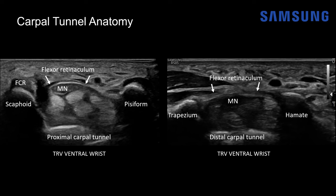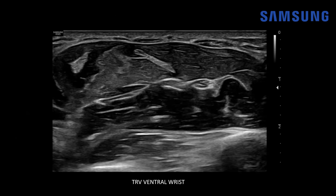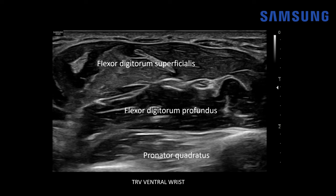Moving more proximal, here at the upper wrist at the distal forearm, we can see the muscles corresponding to those flexor digitorum tendons. This is the flexor digitorum superficialis muscle group, and deep to that is the flexor digitorum profundus muscle group. Deeper still is the pronator quadratus, a band-like muscle extending between the radius and ulna. The median nerve, like all nerves, will have a typical honeycomb appearance — a fascicular pattern with surrounding echogenic connective tissue, as opposed to the echogenic fibrillar structure we see with tendons.